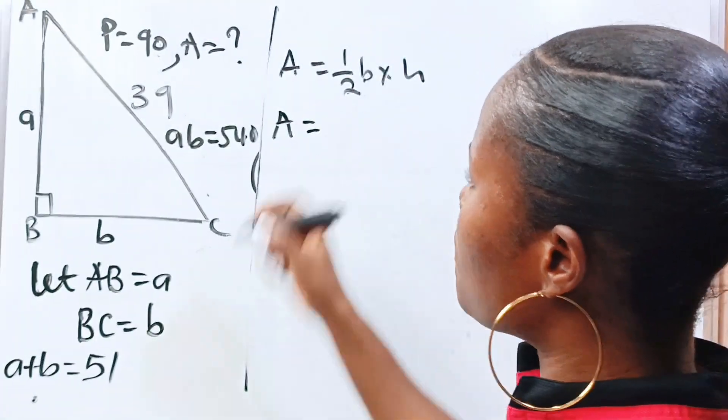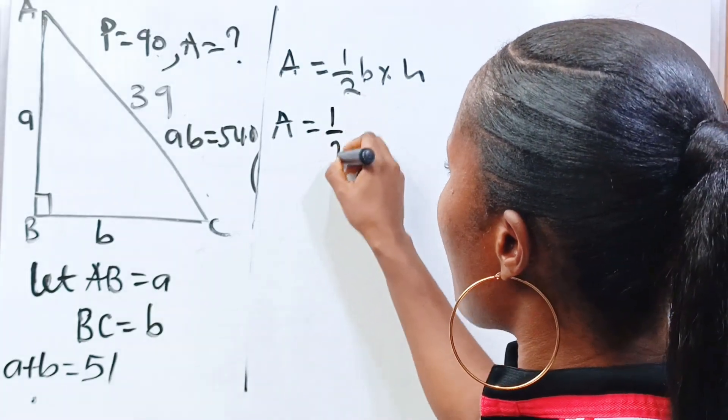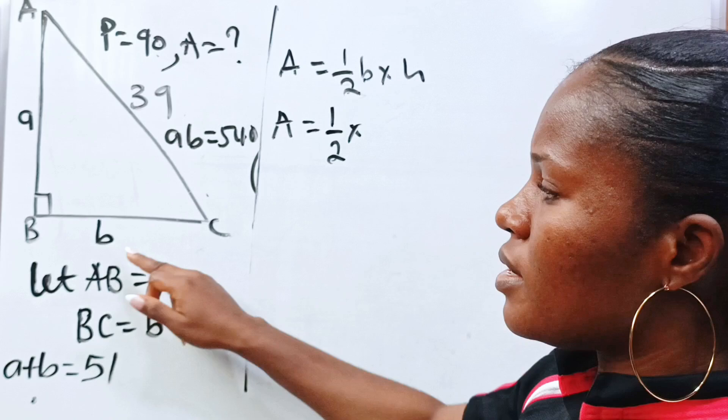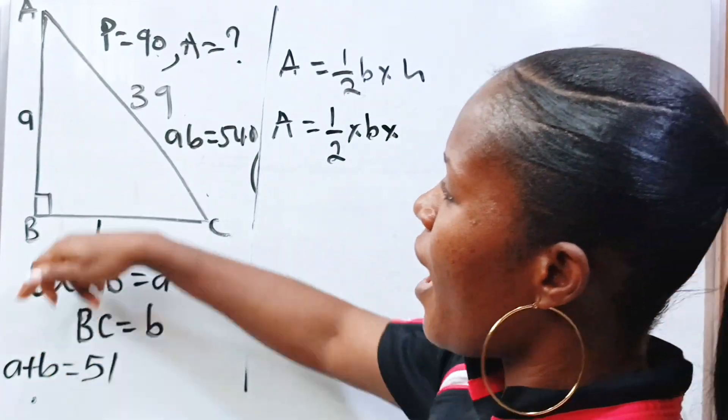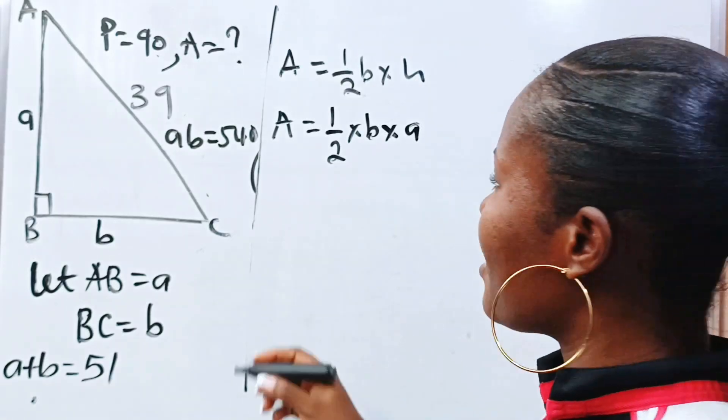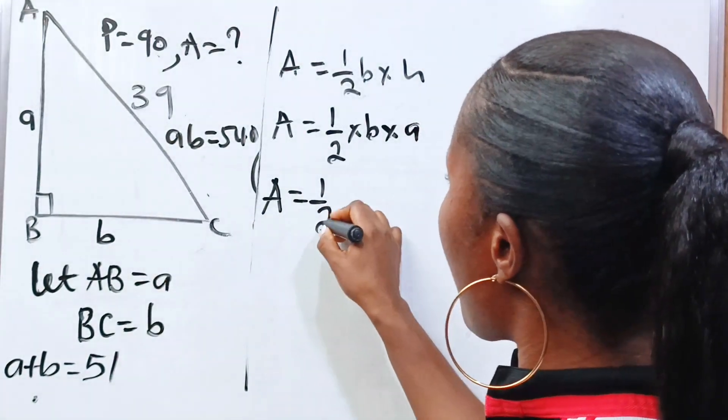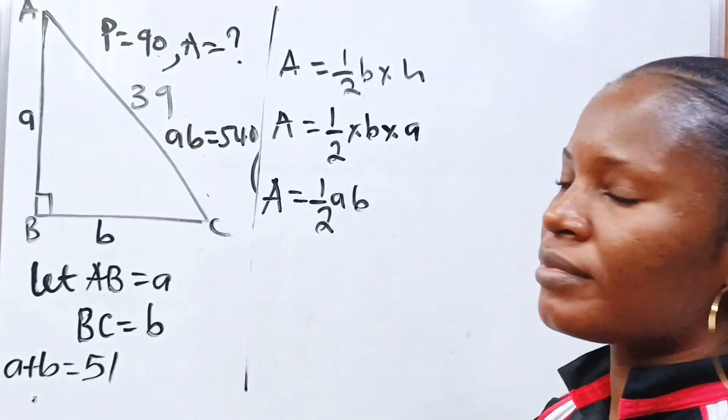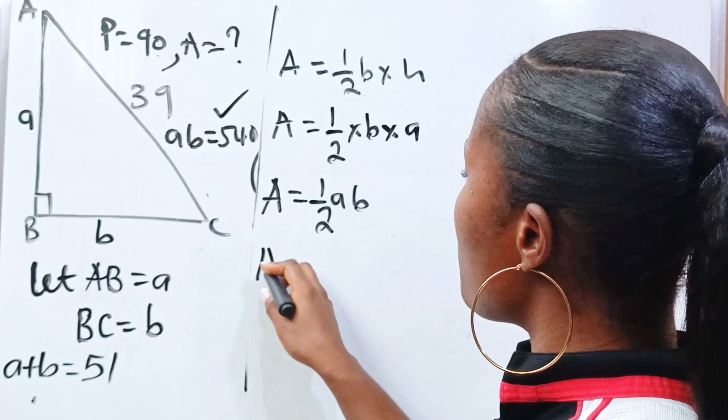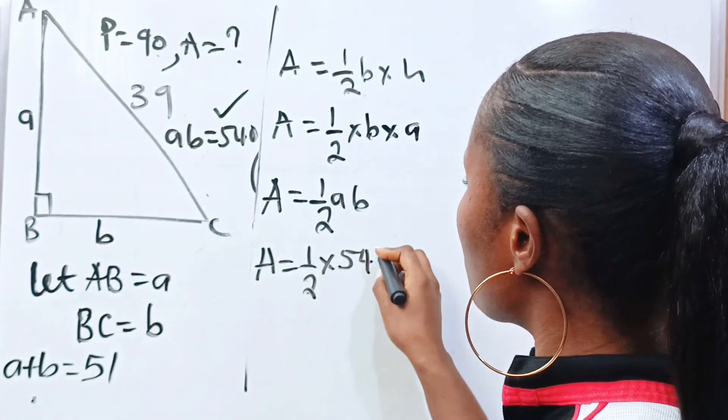So area of triangle ABC is half times the base, which is B, times the height, which is A. Are you seeing anything? So we can say that the area of this triangle is half times B times A, same thing as AB. And we have our AB here.